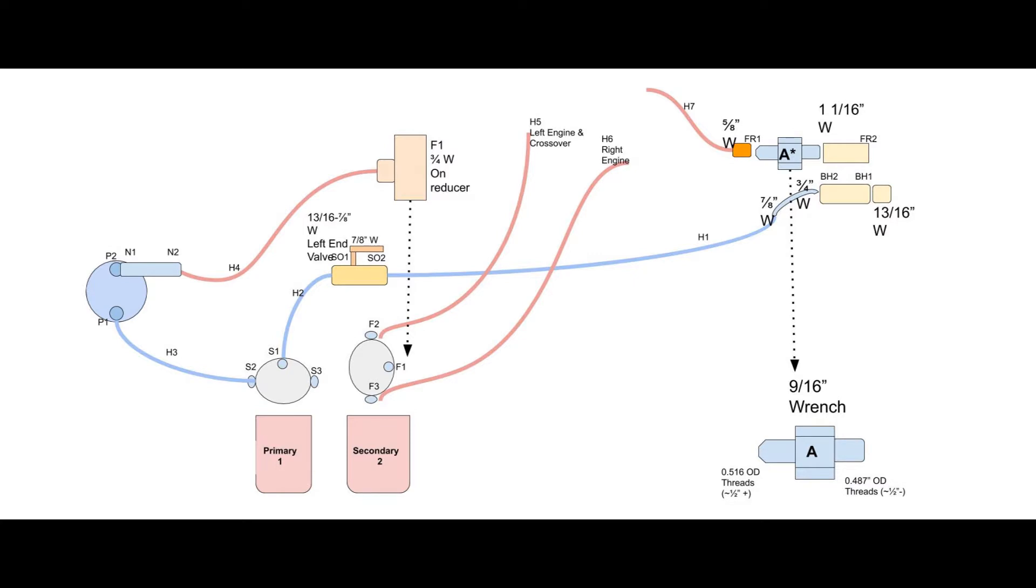First, the mechanic tested the system for leaks by clamping off the fuel return and used the diesel priming pump to pressurize the secondary filter input through to the fuel return line with 60 psi and watching for any change in gauge pressure. There was a small leak at an incorrect bevel fitting in the fuel return line.